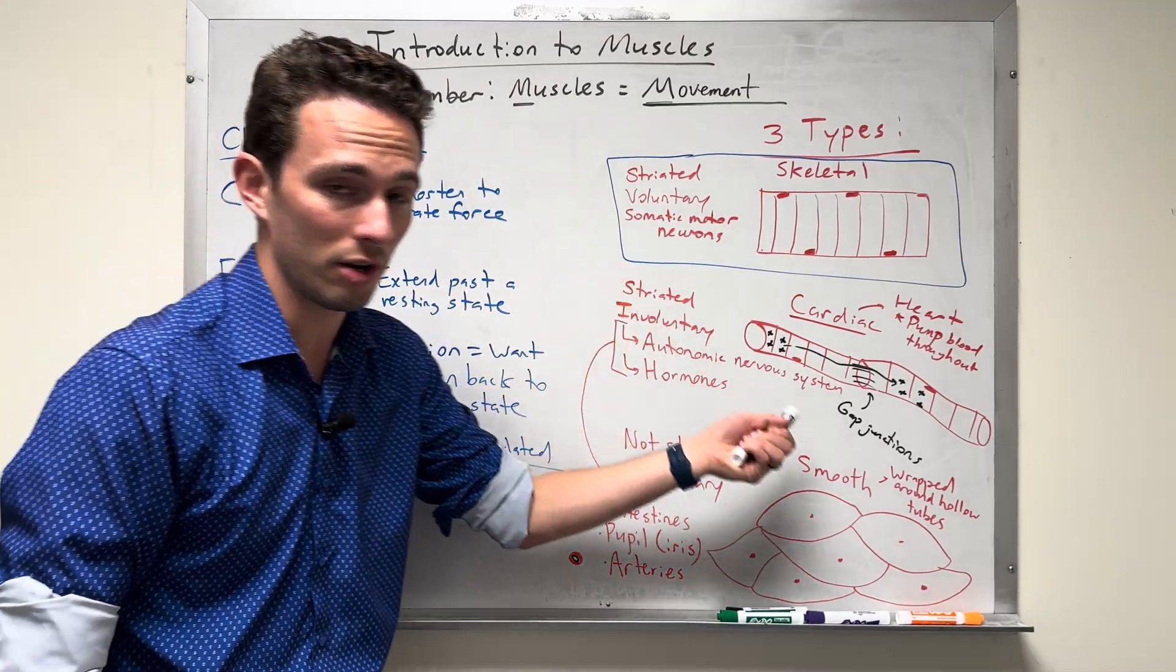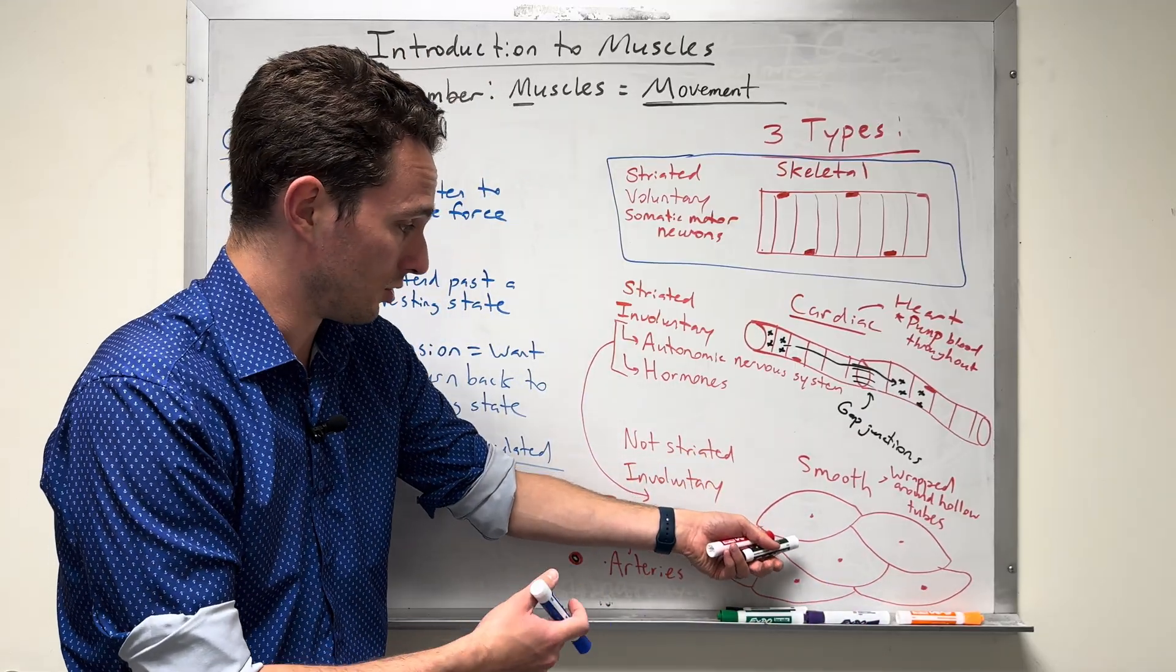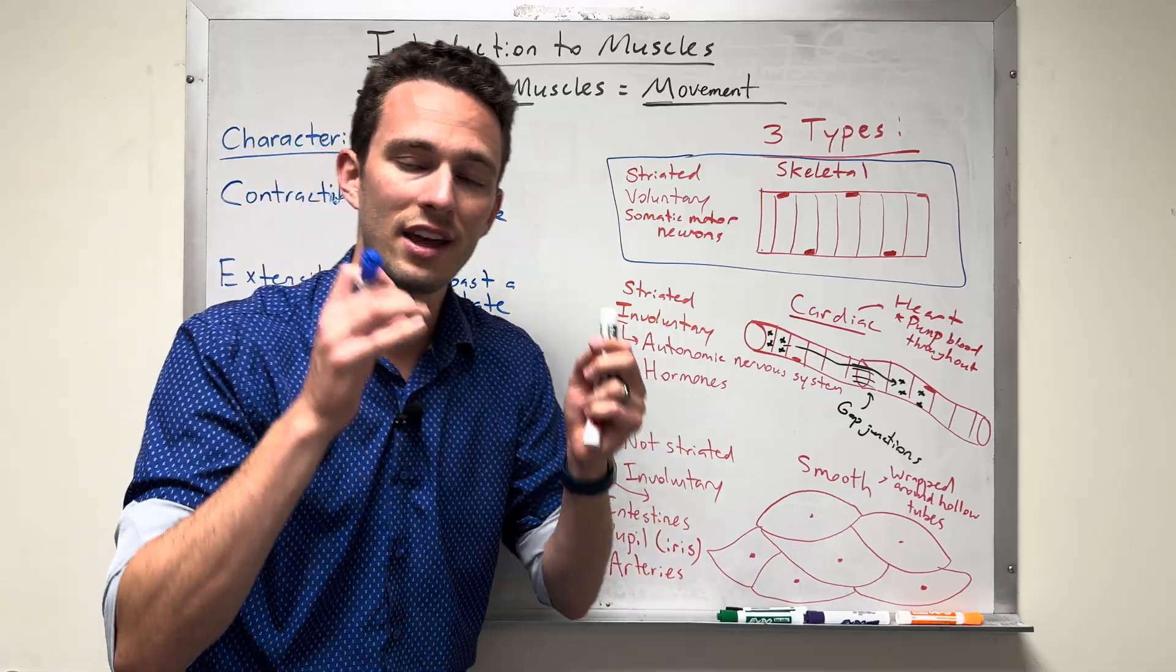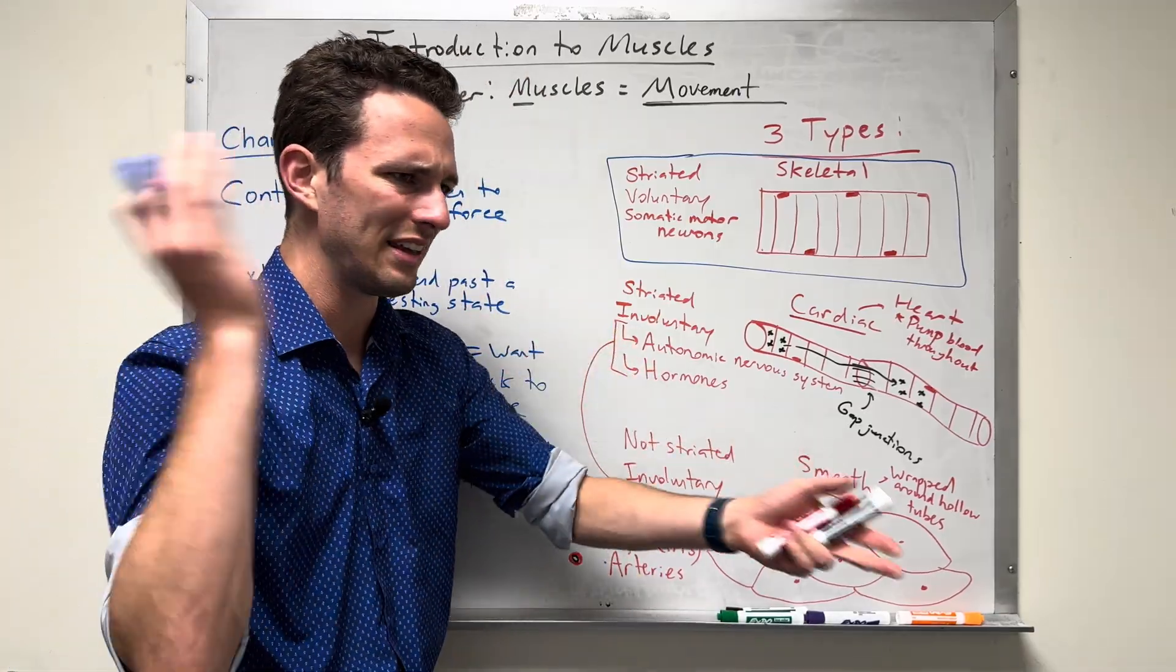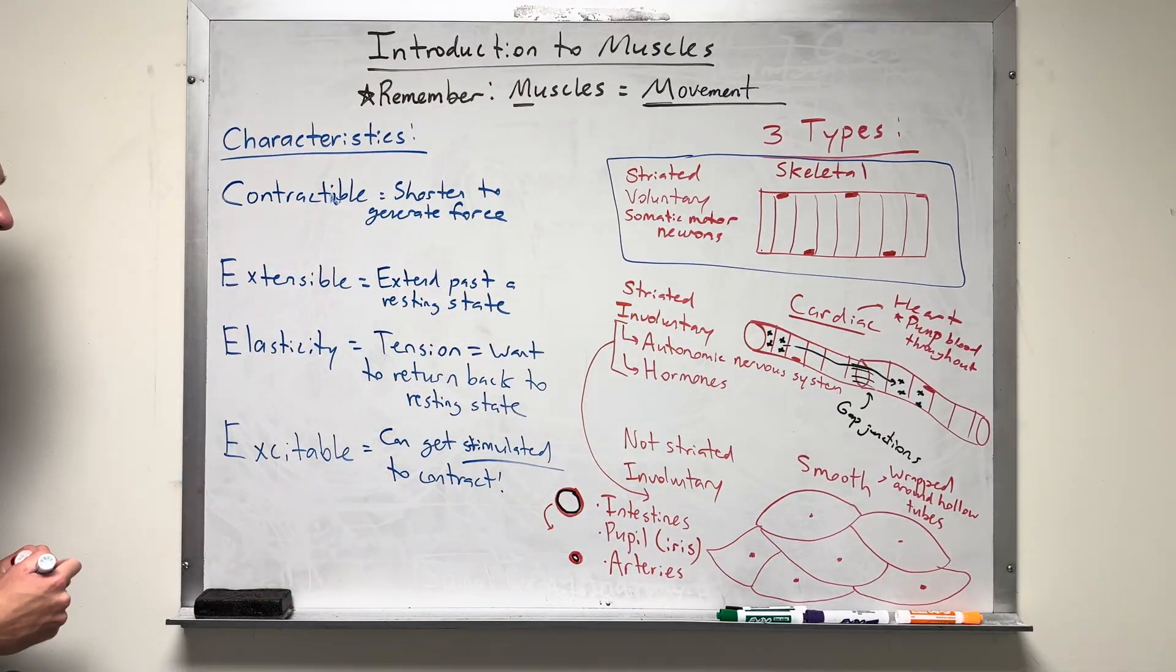When we want it to. We have neurons that are going to communicate to those muscles to tell them when they contract. Same thing with the heart muscle. When does your heart muscle need to contract? Whenever it gets told. When does the smooth muscle get told to contract? Whenever it gets told by the autonomic nervous system and hormones. So the muscles don't just contract willy-nilly. They are told in a very specific manner. And that is called excitability.